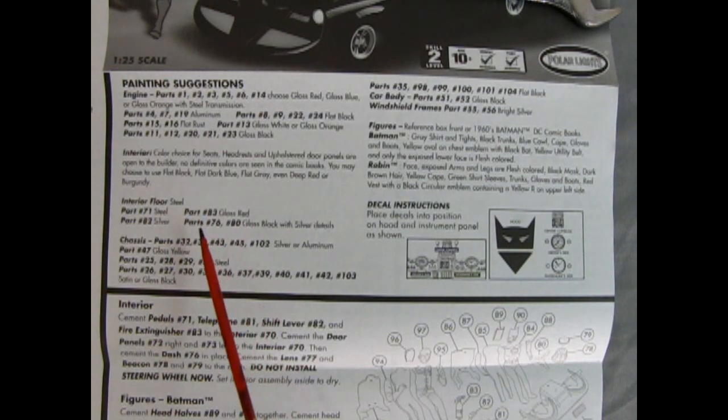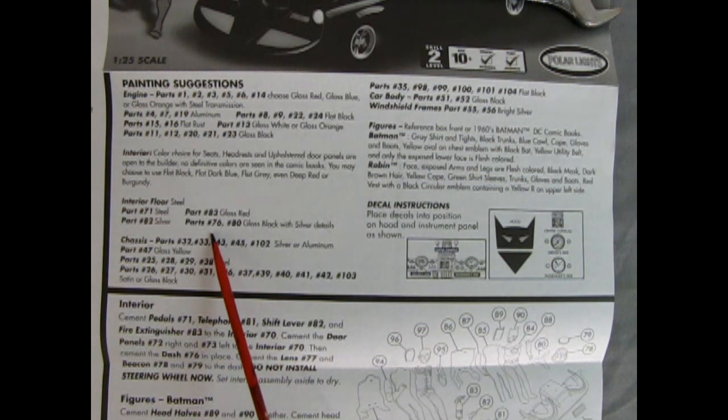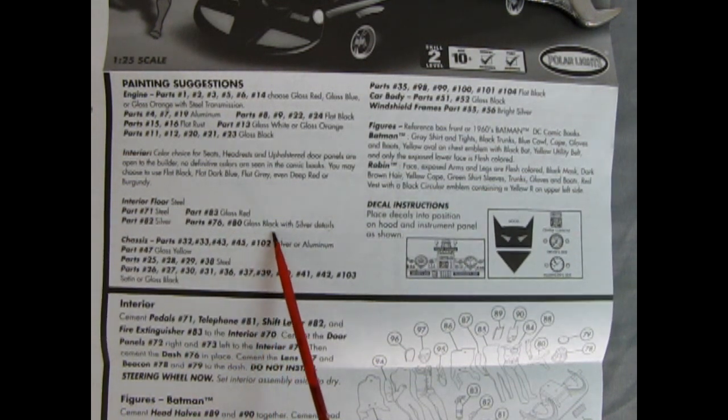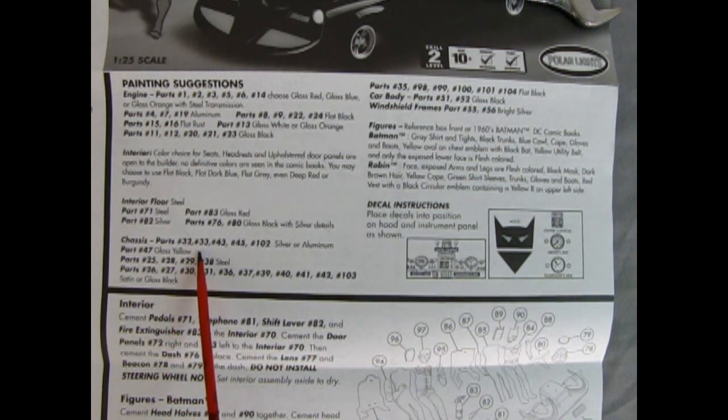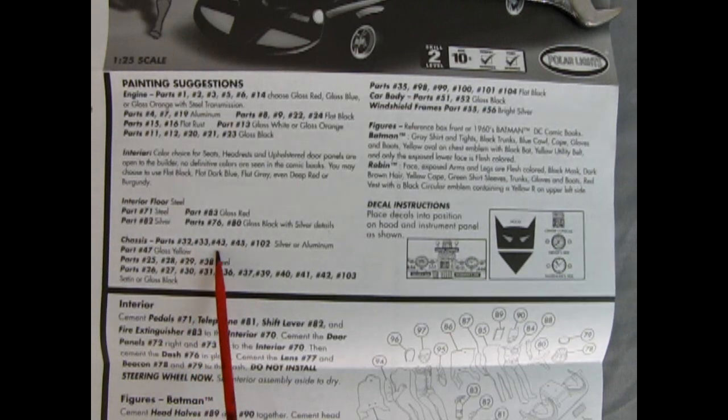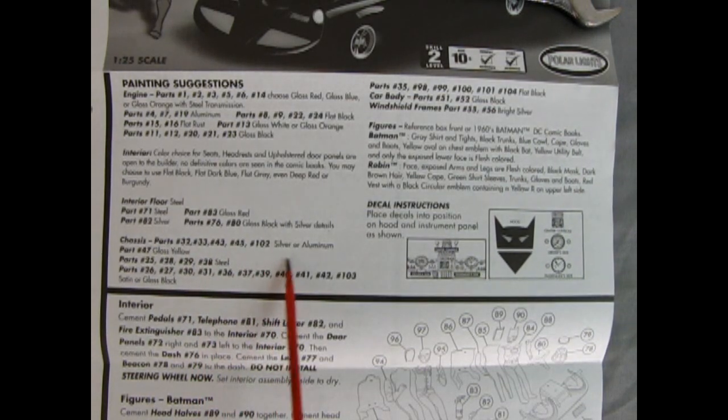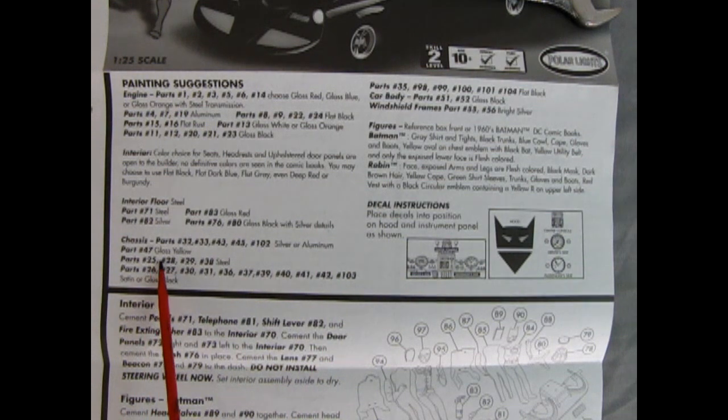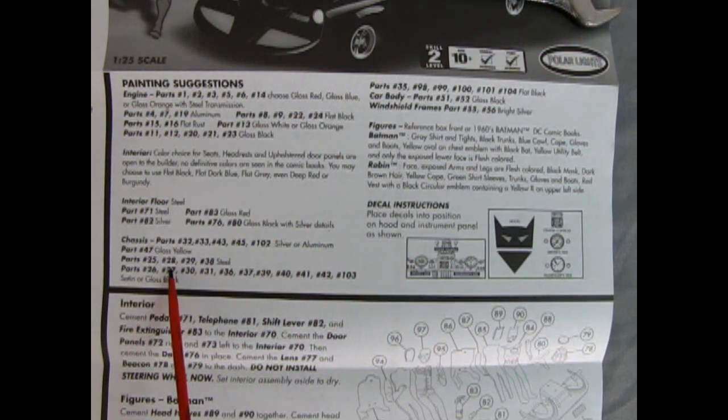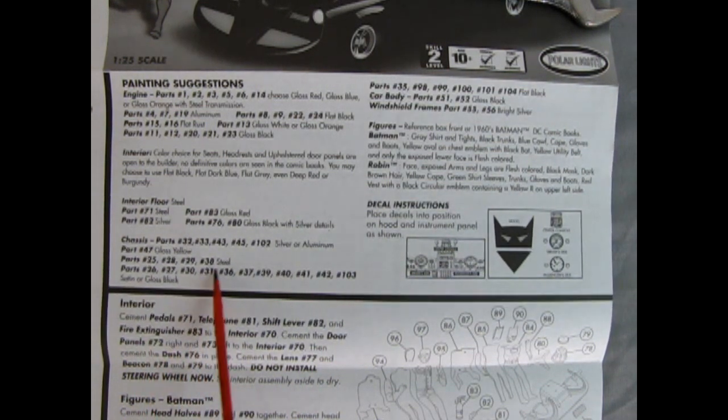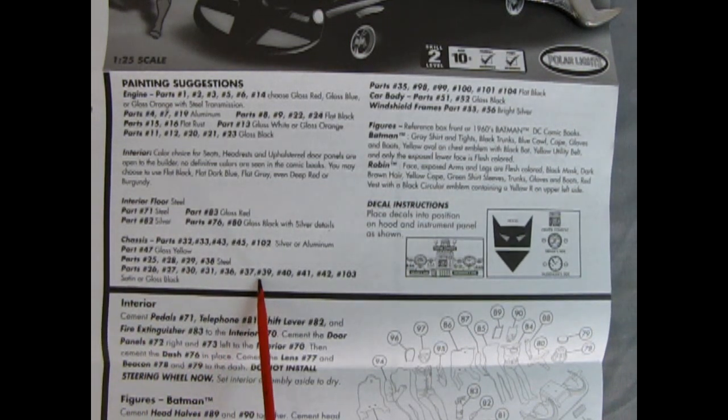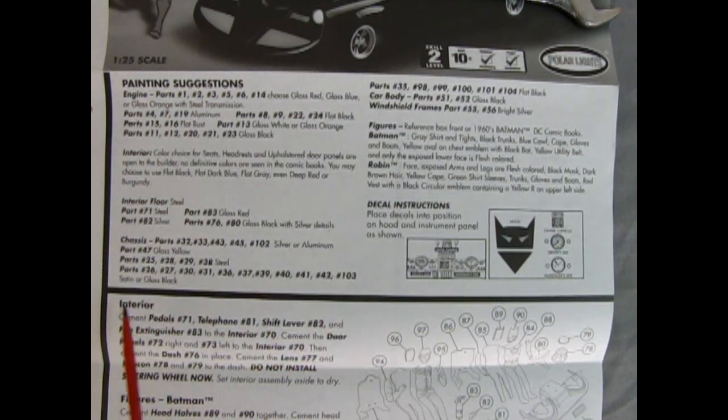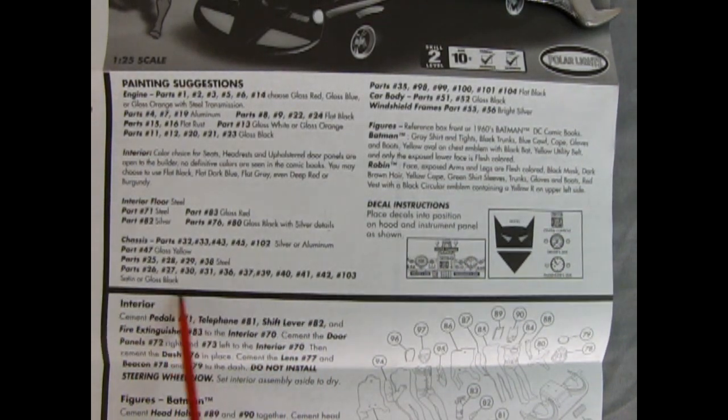Interior floor is steel. Part 71 is steel. Part 82 is silver. Part 83 gloss red. Parts 76 and 80 gloss black with silver details. On the chassis, parts 32, 33, 43, 45, and 102 are silver or aluminum. Part 47 is gloss yellow. Parts 25, 28, 29, 38 are steel. Parts 26, 27, 30, 31, 36, 37, 39, 40, 41, 42, 103 satin or gloss black.